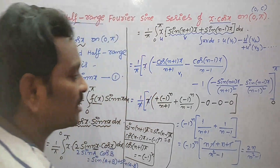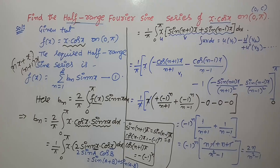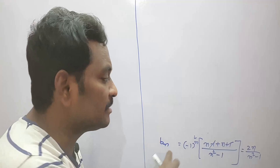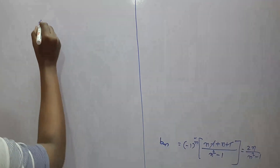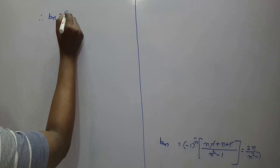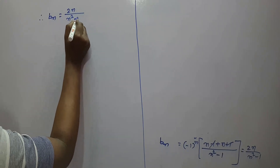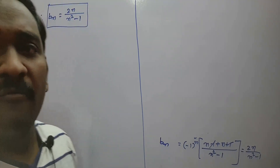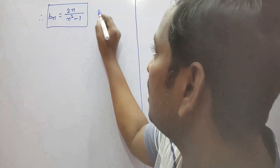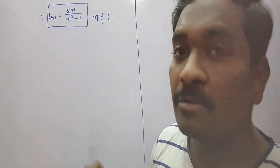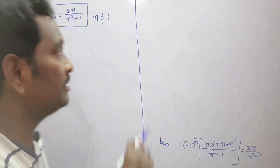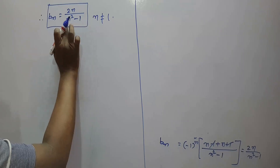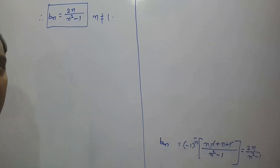So b_n = 2n·(−1)^n / (n²−1). We observe that this value is finite only when n ≠ 1. If n = 1 the denominator becomes 1−1 = 0, making the expression infinity. That's why we cannot use this formula when n = 1.